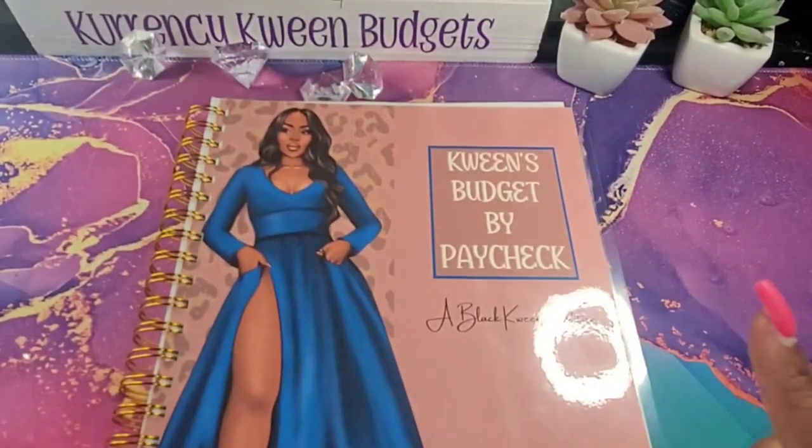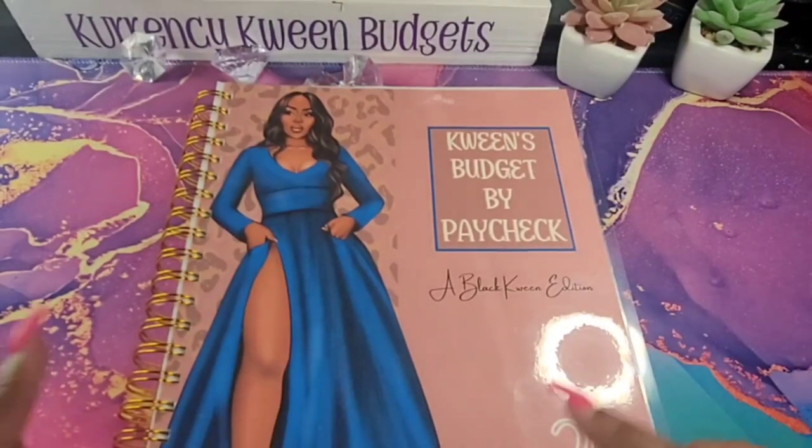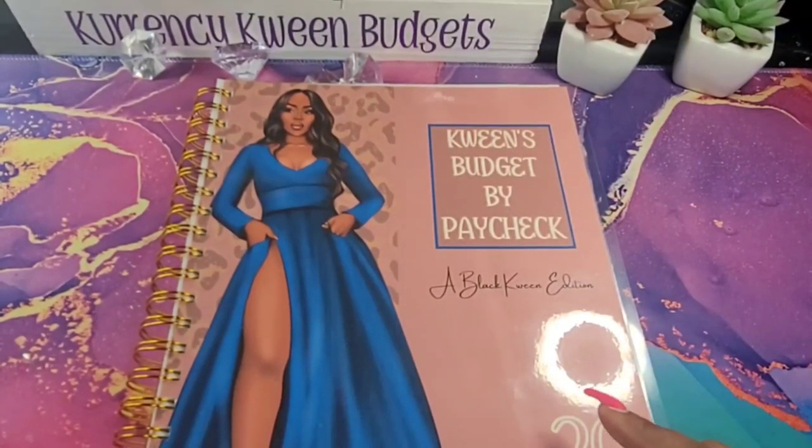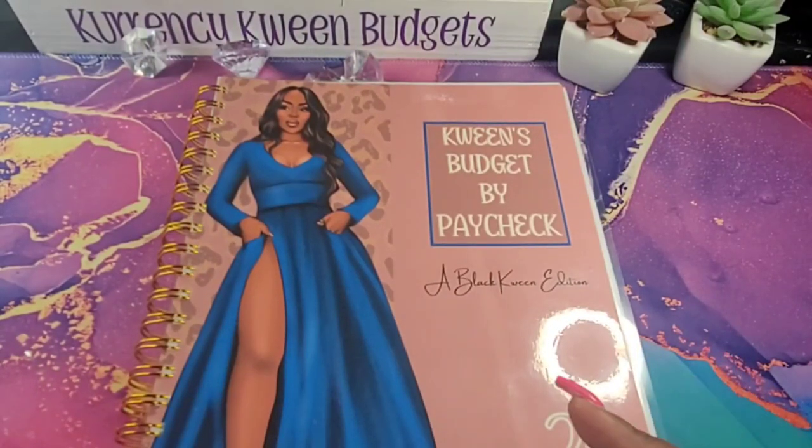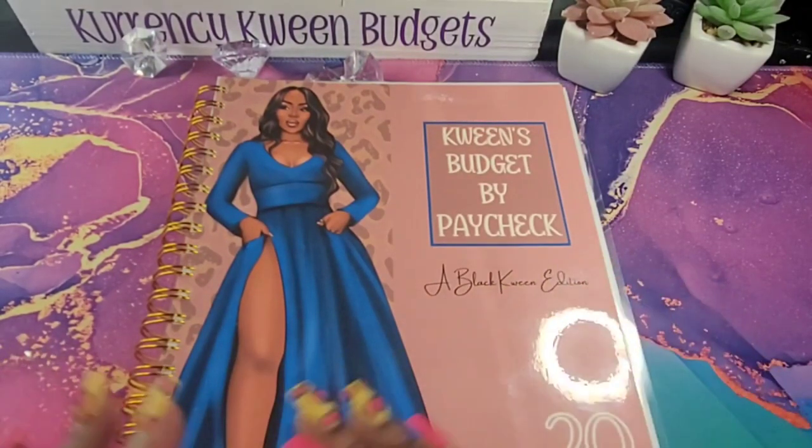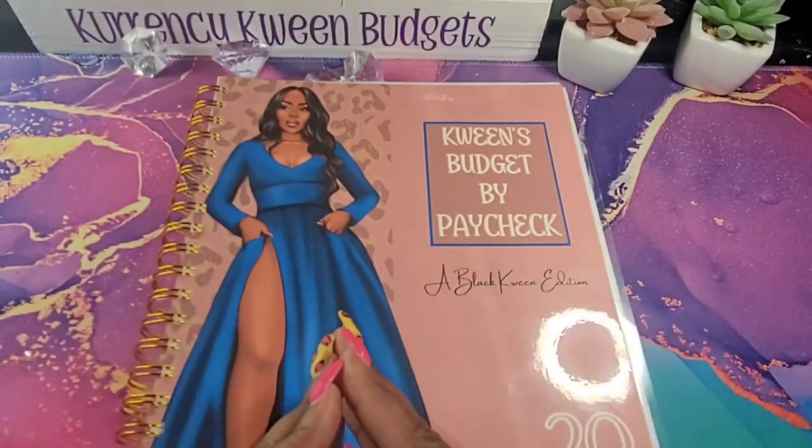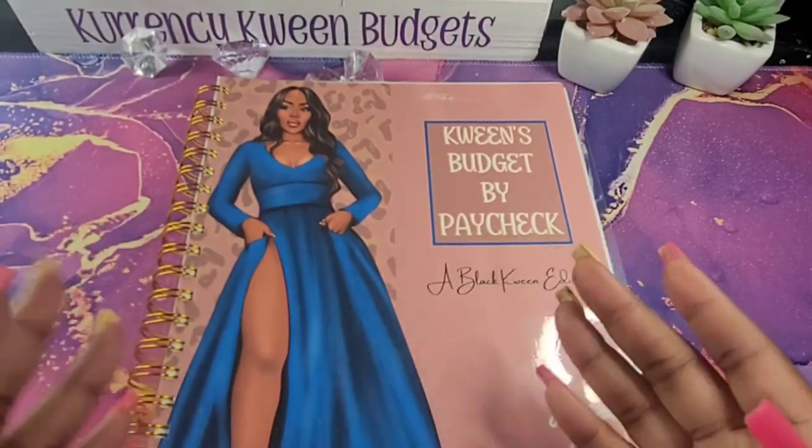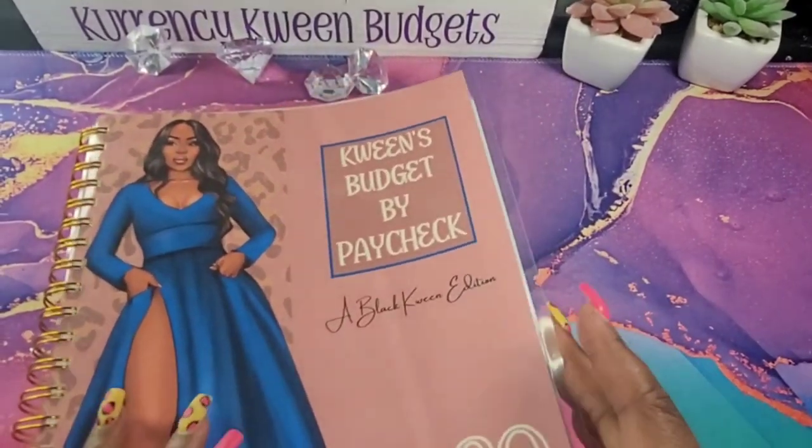All right, so we are going to be using my Queens budget by paycheck. This book can only be found on my website, which is www.currencyqueen.com. Go ahead and head over there and you will find better prices than you find on Etsy just because they do charge us to use their website. So yeah, go by and check it out.